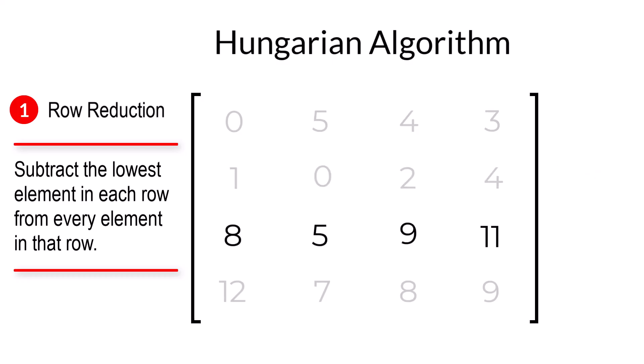For row three, the smallest value is five. And, for row four, the smallest value is seven.